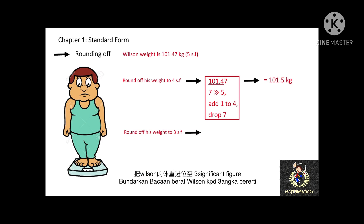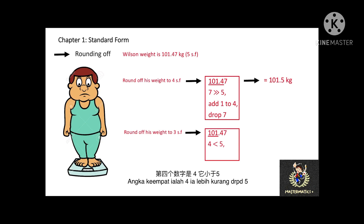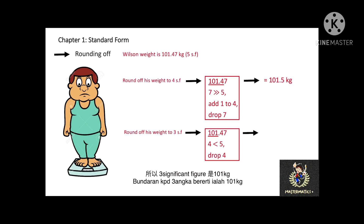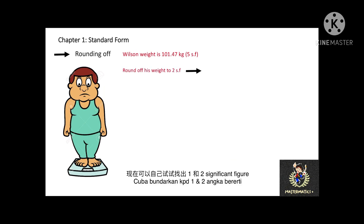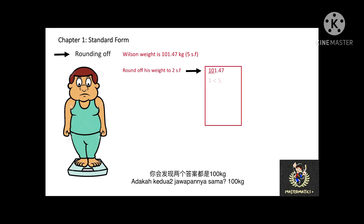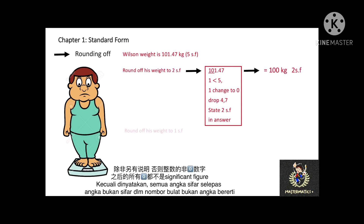One more example: I want to round off Mr. Wilson's weight to 3 significant figures. Now I look at the fourth digit, which is 4. Since 4 is less than 5, we drop it, and in 3 significant figures the answer is 101 kg. Can you round off to 2 and 1 significant figures? Both answers are 100 kg, but make sure you state 2 significant figures for the first answer and 1 significant figure for the second, because all zeros after a non-zero digit in a whole number are not significant unless stated otherwise.